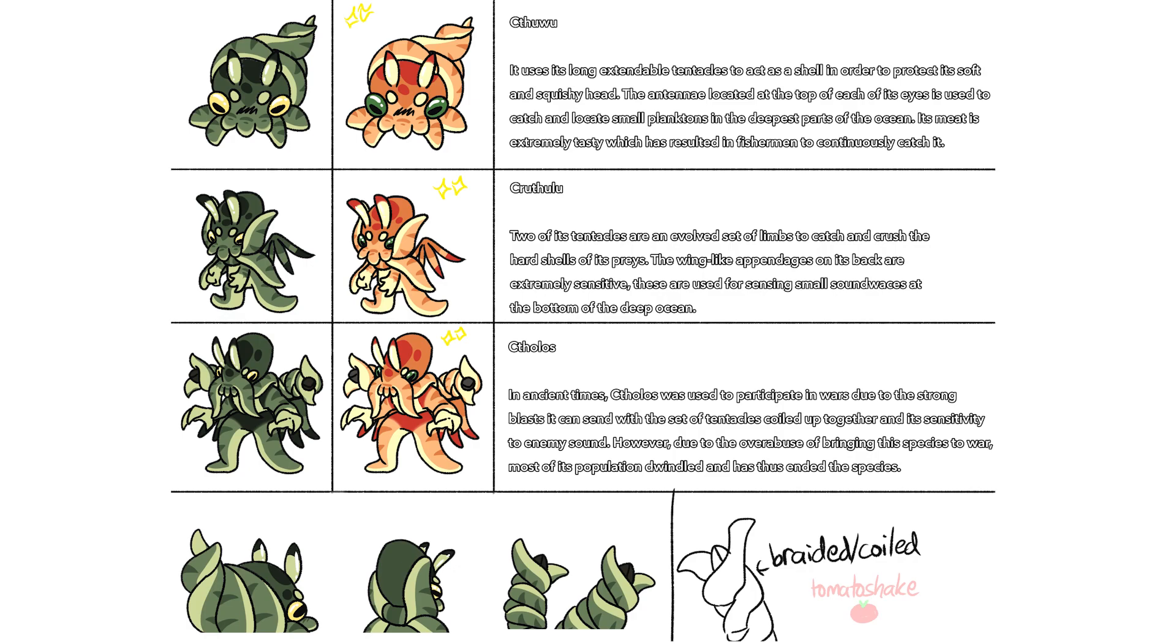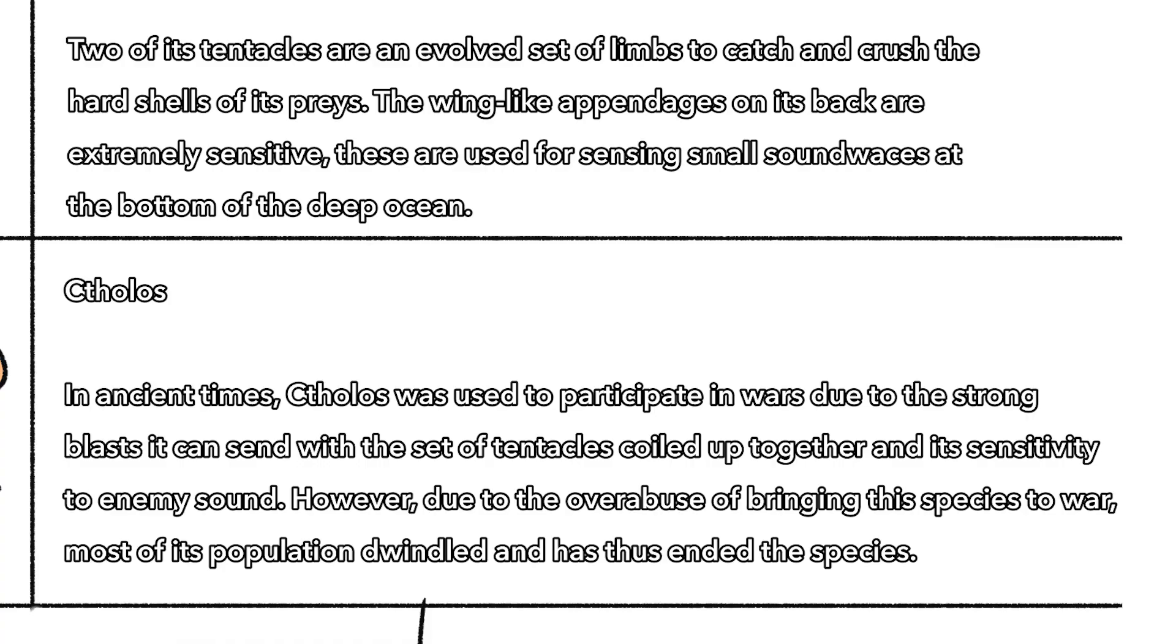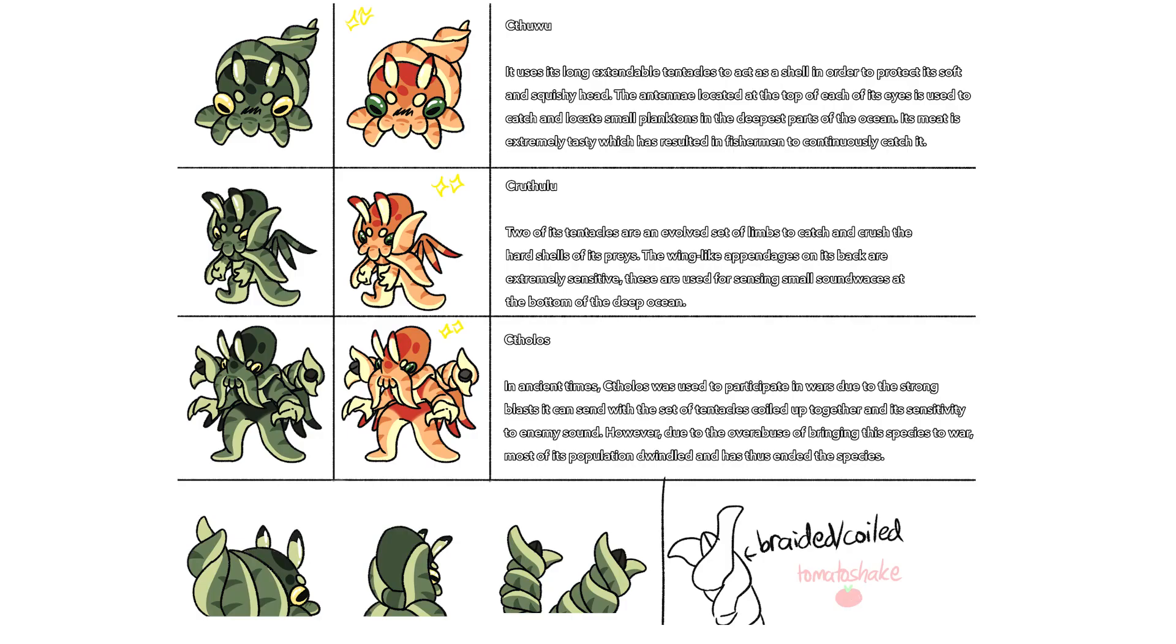This is the back spray, obviously on the back. Then it says braided slash coiled, which shows that the back has coils to it, making it kind of look maybe even better. It says right here the blast it can send with the set of tentacles coil up together and it's sensitive to enemy sound. So practically it looks like a very cool doodle and I can't wait to see it.